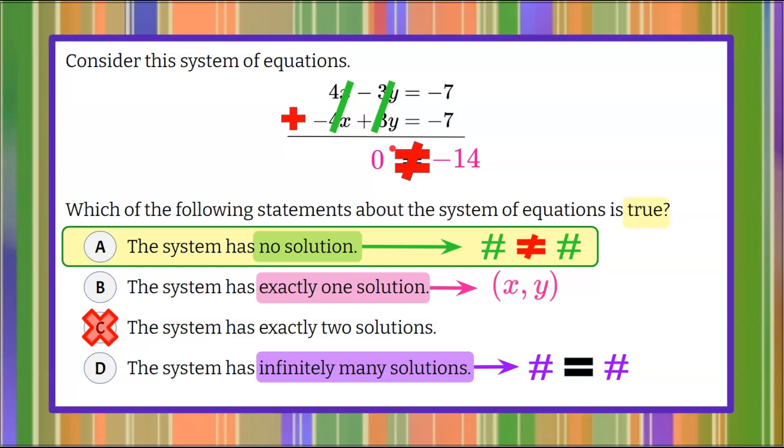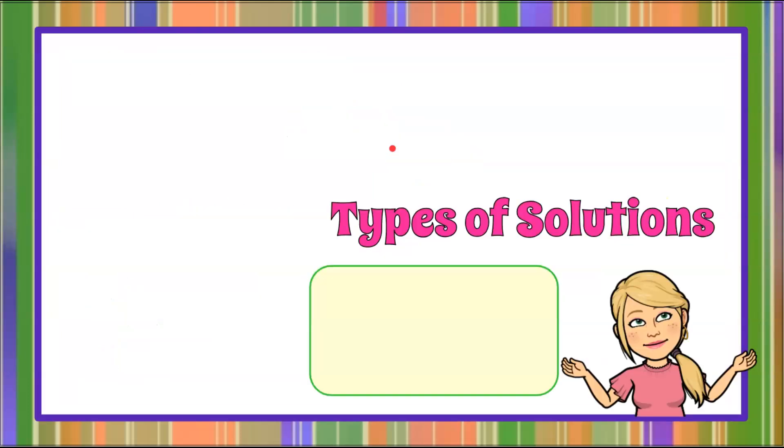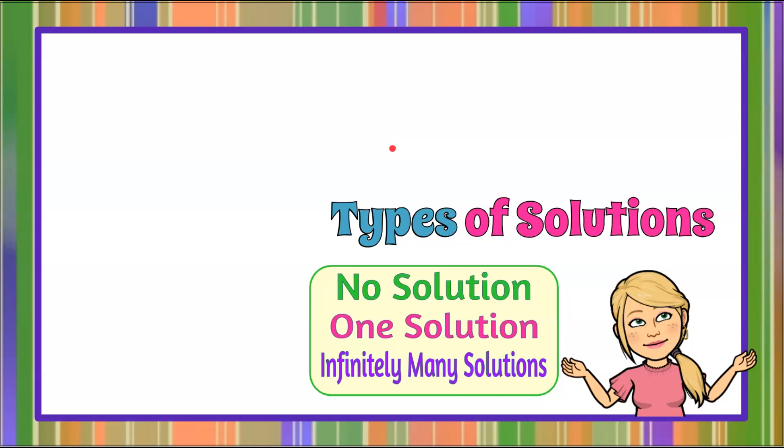If I graphed these two linear equations, they would be parallel lines. And there you have it. Types of solutions: no solution, one solution, or infinitely many solutions.